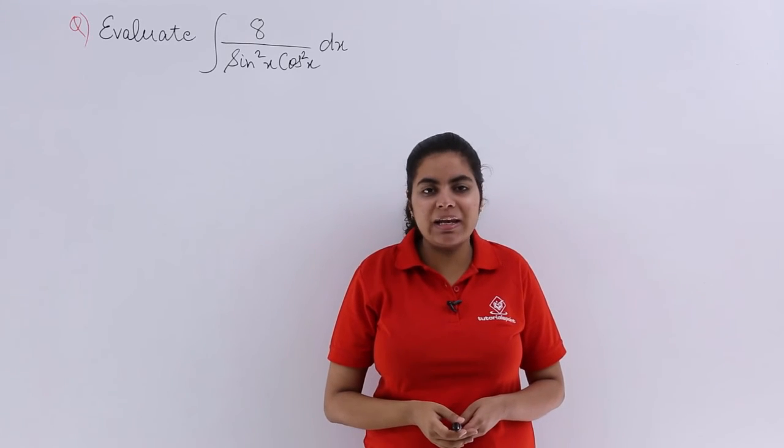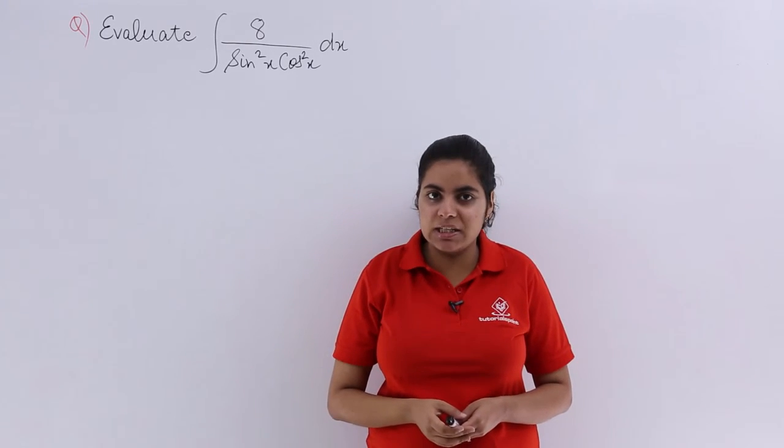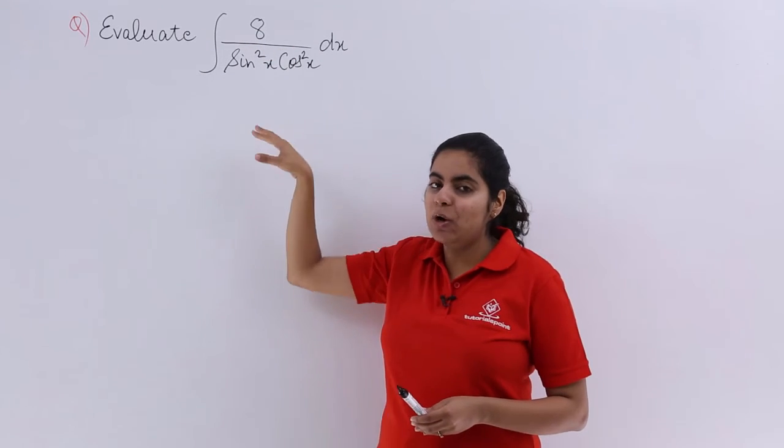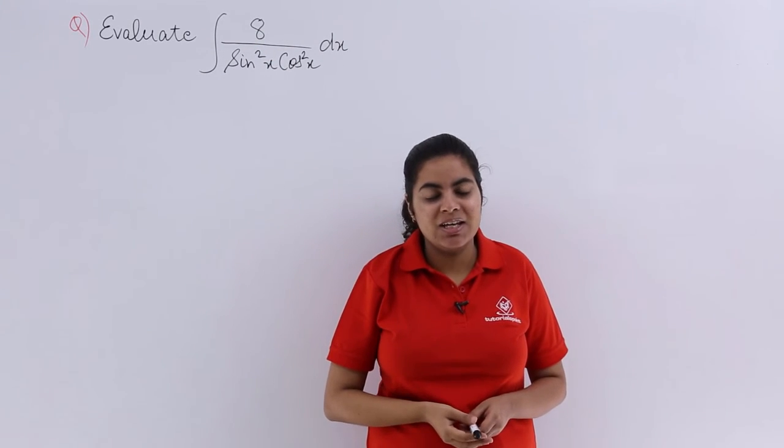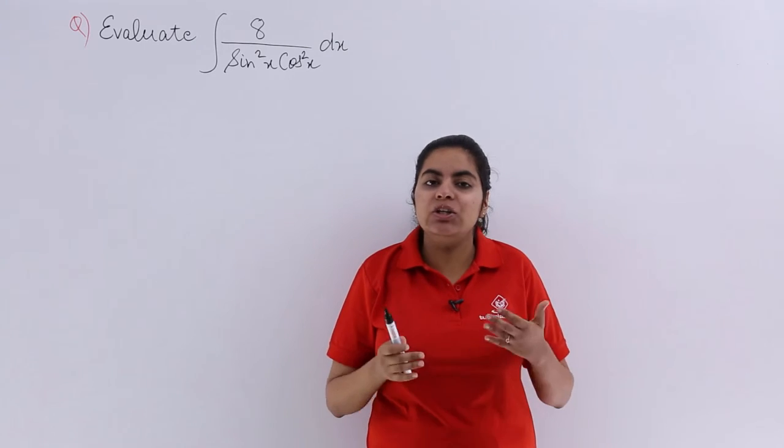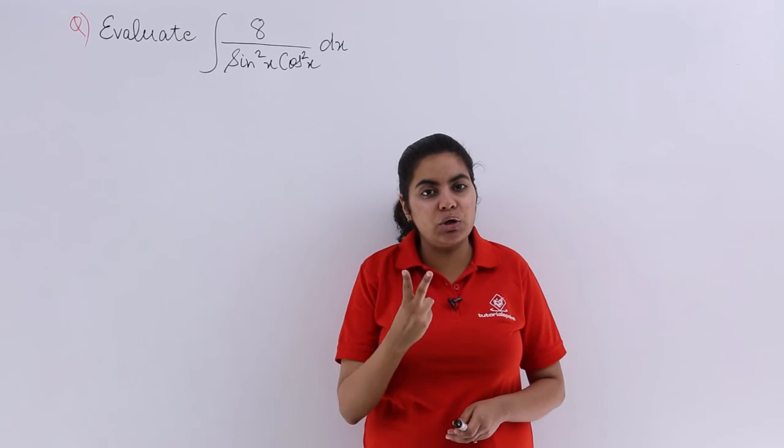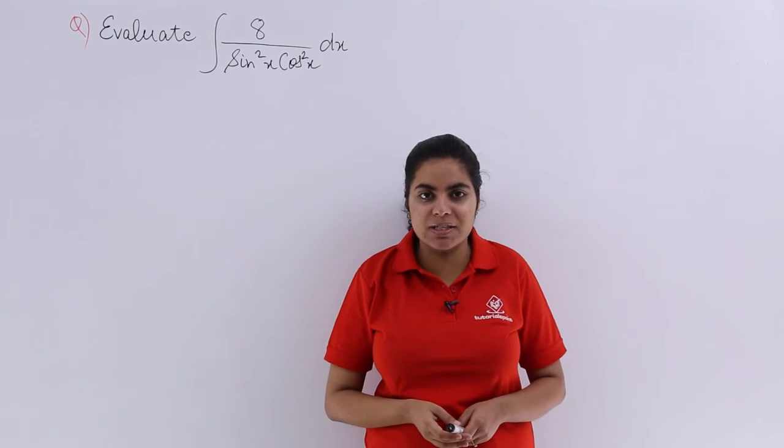This video has another numerical based on evaluation of integrals. It says evaluate the integral of 8 upon sin square x cos square x. We see that the numerator has only one digit, that is 8, and the denominator has the product of two things, that is sin square x and cos square x.